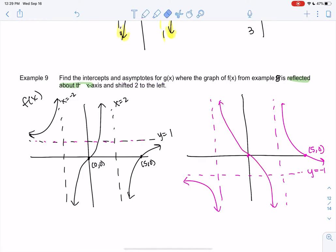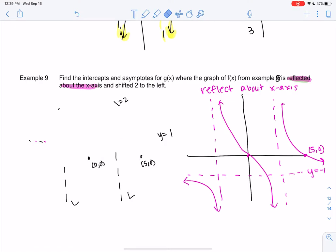I totally switched the coloring. So that's my reflection. And then let's shift it 2 to the left. So I'm going to erase the original. And we're going to shift 2 to the left just to make more space.